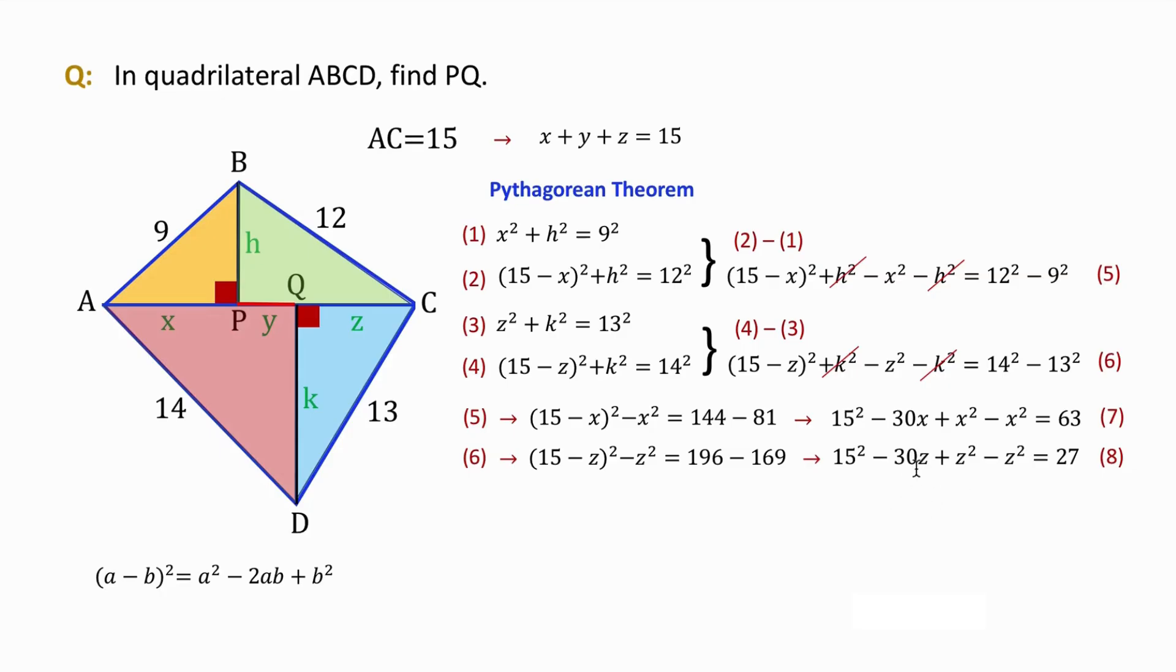And again, we can simplify them by eliminating X squared and Z squared to find two equations in terms of X and Z. Now let's rearrange the terms like this to have unknown terms on one side and the other terms in the opposite side. If we simplify these two, we get equations 9 and 10.